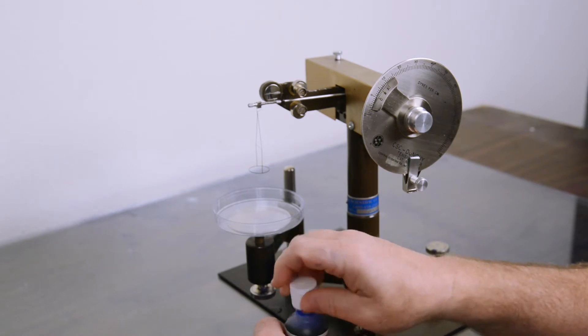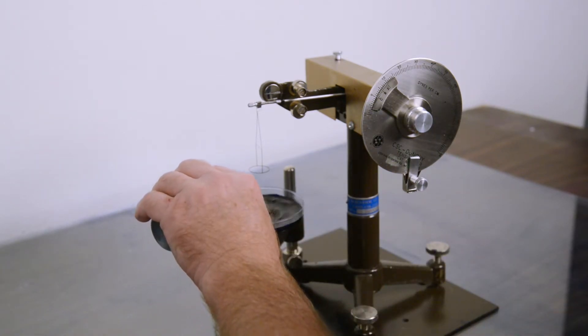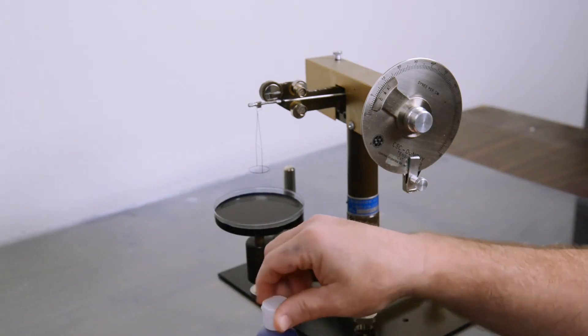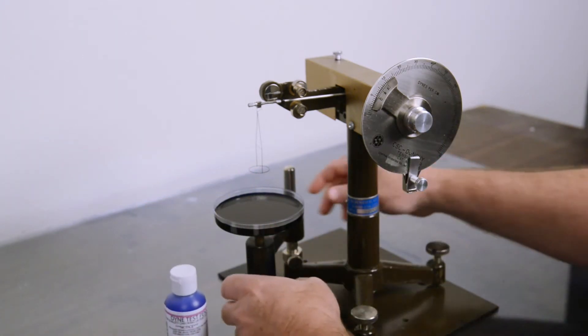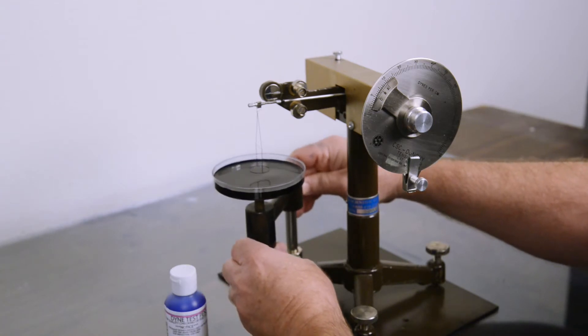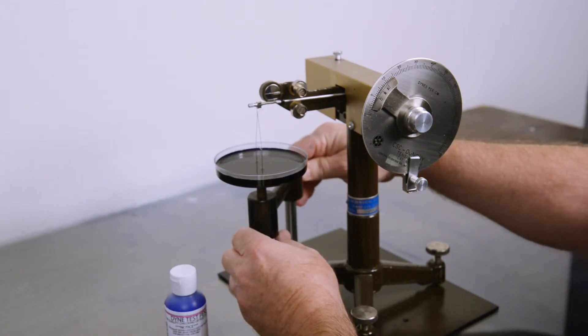We are going to pour the ink solution into the petri dish so it is just below the level line, put it aside, and adjust the arm so that the ring is just below the surface of the ink.